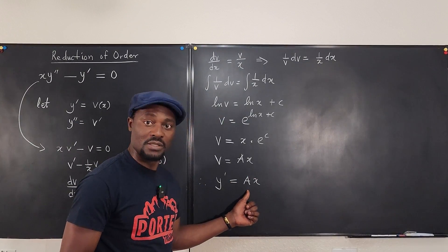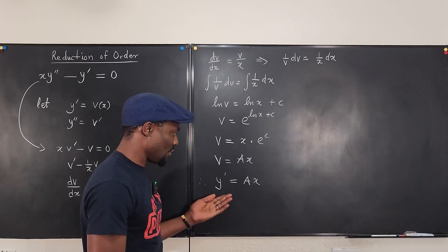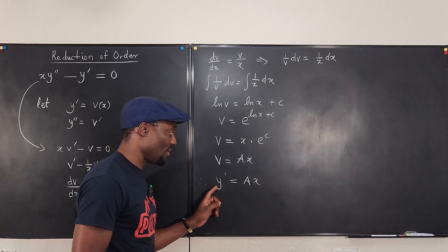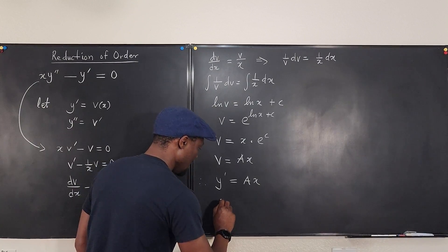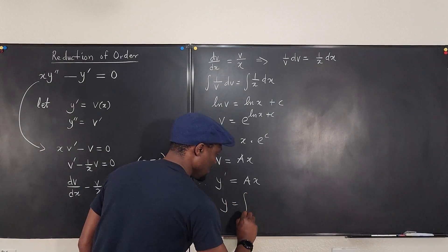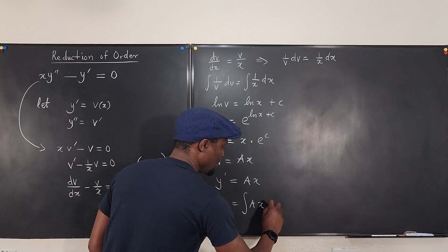Where a is a constant. Okay, so now, do you think you can solve this? Yes, we can. Because if the derivative of a function is ax, what is the function? We know that y clearly is the integral of ax with respect to x.